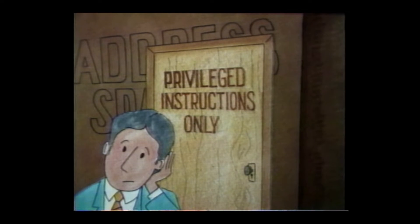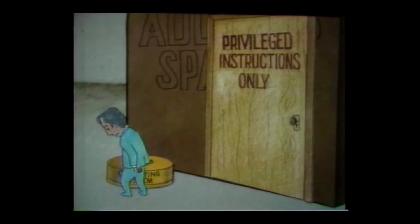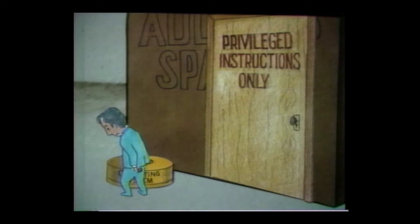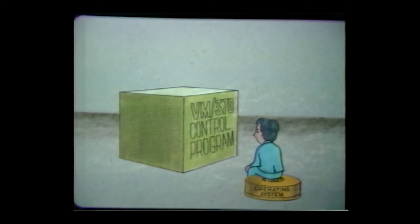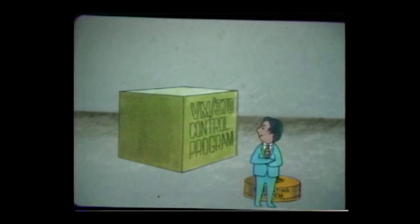Use of the Start I/O instruction is restricted to the real control program that executes in the System/370 privileged state. Now this is too bad, because there are many functions that could be performed in an environment where an individual user has access to his own operating system—for example, he could test complex applications, generate an operating system, or develop programs with complete flexibility in scheduling and without interfering with anyone else's work. And it's just this kind of capability that's provided by the operating system called VM/370, the Virtual Machine Facility 370.